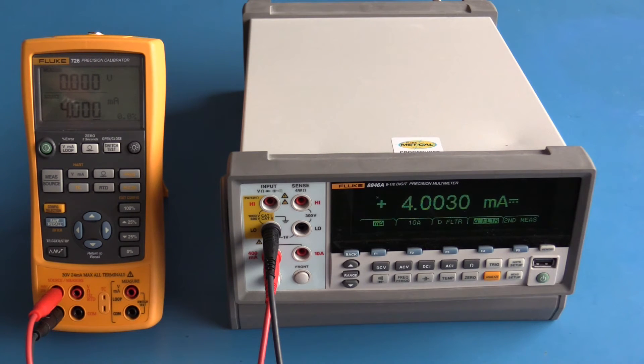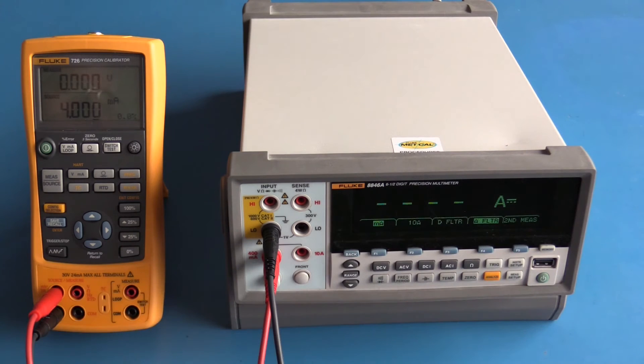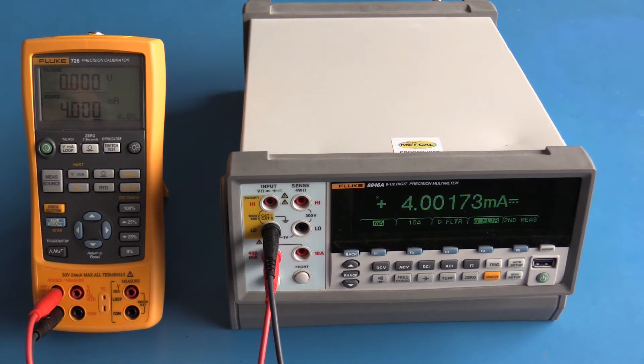A downside of dot matrix display is very quick updates become very difficult to read. I'm going to change the measurement setup to six and a half digits, 100 PLC. The update is now a lot slower and it becomes very easy to read but it's really too slow to be useful. This is why I really like the five and a half digit resolution mode on this particular meter. The significant digits are still relatively easy to read but the meter is also making quite quick measurements.